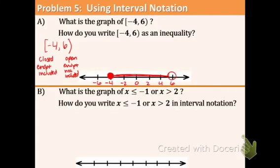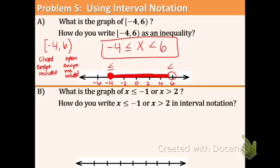If you don't see the word OR and it's just one interval combined, it's the overlap — that's the AND inequality, which we learned yesterday. Now it's asking how to write that interval as an inequality. X is in the middle: a closed dot means the symbol has a line underneath, and an open dot means no line. So the answer is: -4 ≤ x < 6.